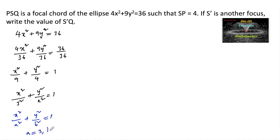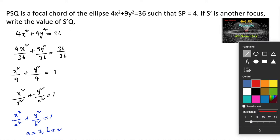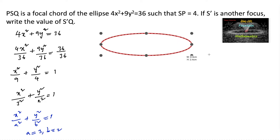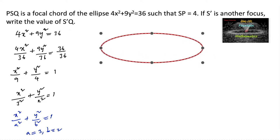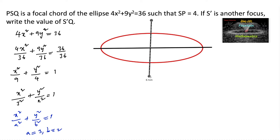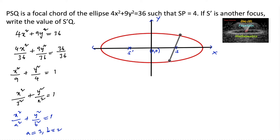So where a = 3 and b = 2. Let's consider this ellipse diagram whose center is (0, 0), and let's take S and S' as the foci. It's given that PSQ is a focal chord, so let's consider P, S, and Q on the ellipse.